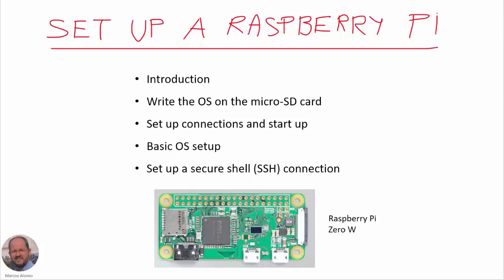Hi everyone, welcome to this presentation. This time we are going to see how to set up a Raspberry Pi microcomputer board. This is the outline of the presentation: firstly an introduction, then how to write the operating system on the micro SD card, how to set up all the connections and do the start-up of our board, then the basic operating system setup, and finally how to set up a secure shell SSH connection. We are going to use as an example the Raspberry Pi Zero W.